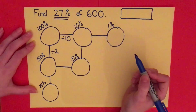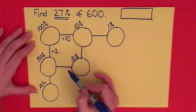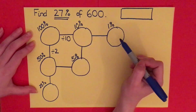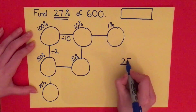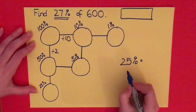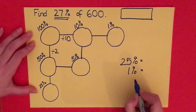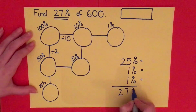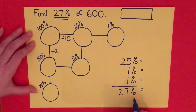Now I can think about which bubbles I need to find 27%. I could do 10% + 10% + 5% + 1% + 1%, or the quicker way: use the 25% bubble, add a 1% bubble to make 26%, and add one more 1% bubble to make 27%. I need to find what value is equivalent to 27% — that will be my answer.